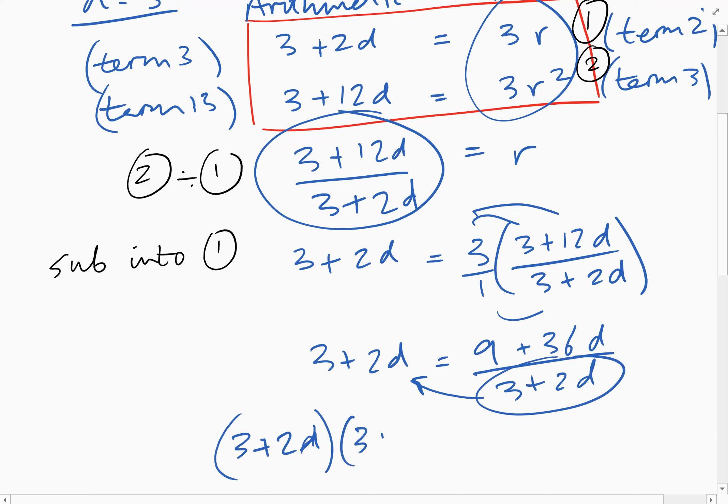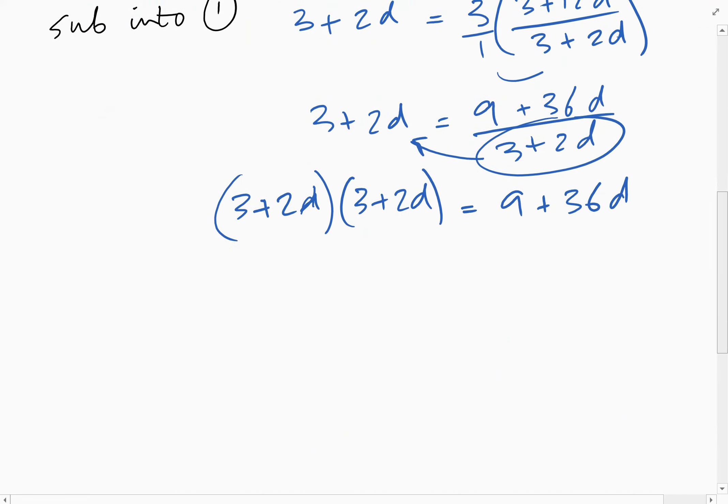This is going to give us a quadratic which we're going to need to solve. Let's multiply out the brackets. That's 9 plus 6d plus another 6d plus 4d squared.